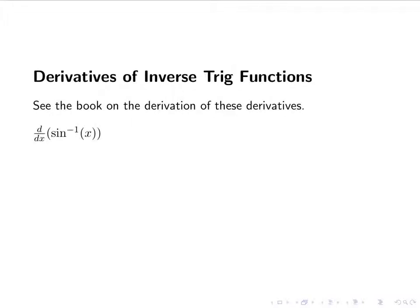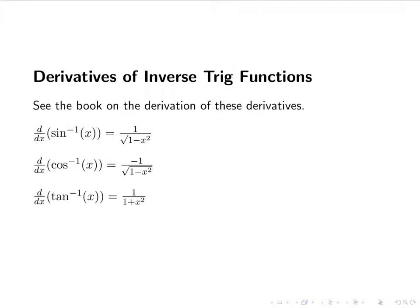We're going to look at three of the inverse trig functions. The first one being sine inverse — the derivative of sine inverse is 1 over the square root of 1 minus x squared. The derivative of cosine inverse is very similar; the only difference is that it's negative. And then the derivative of tan inverse is 1 over 1 plus x squared. So we're always going to have these 1 over things that involve 1 and x squared, whether it's the square root of 1 minus x squared, or just 1 plus x squared.